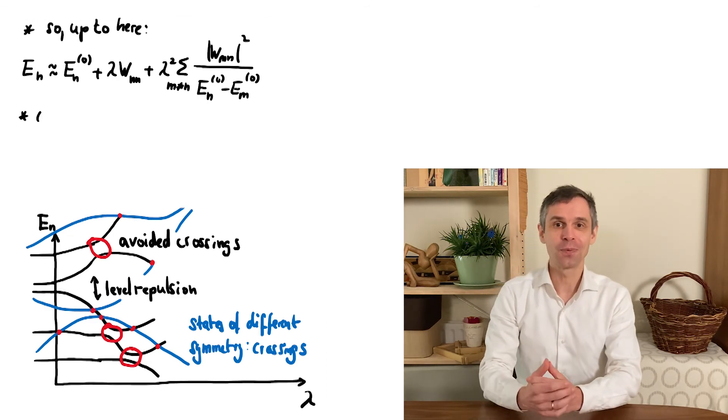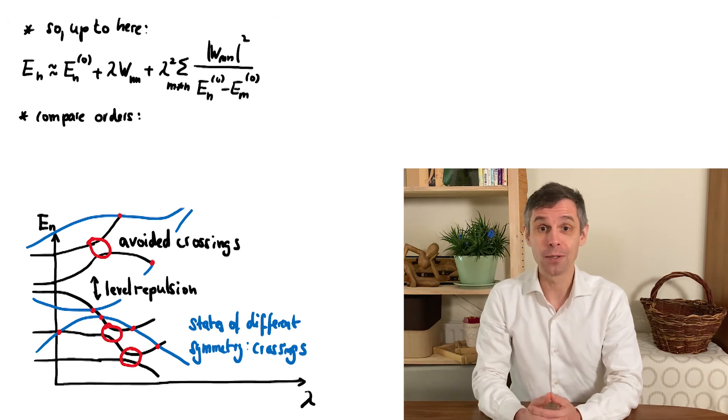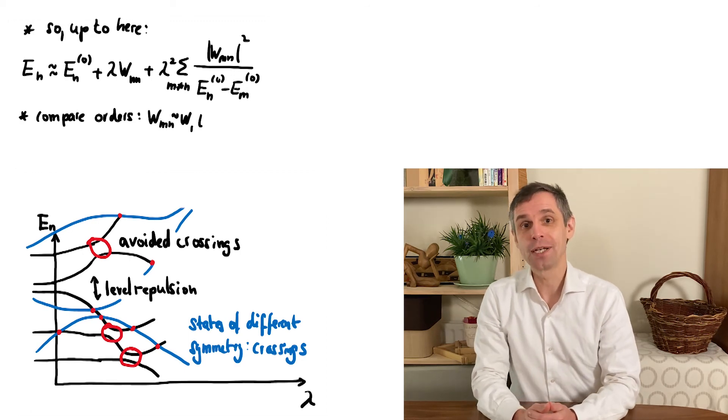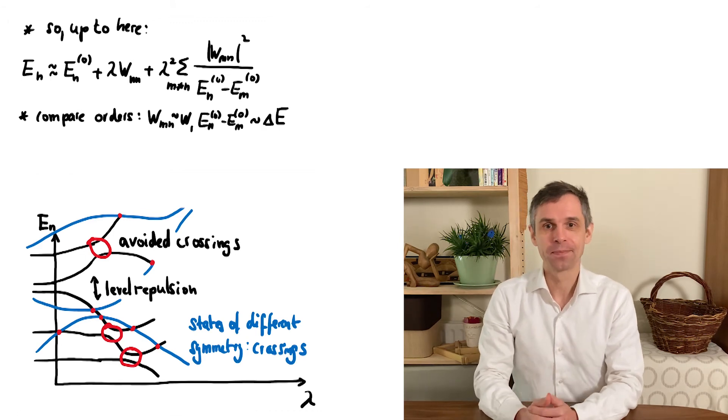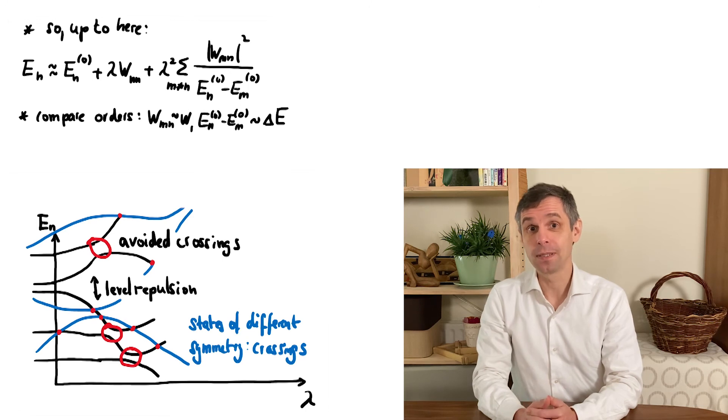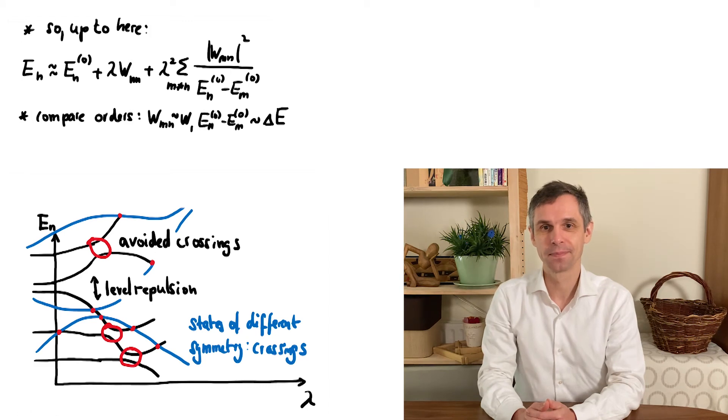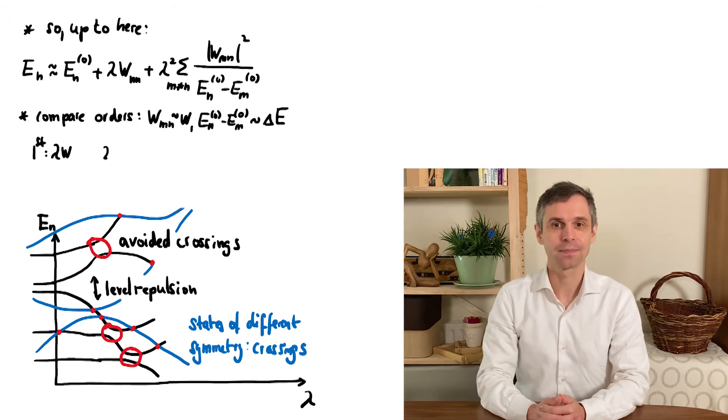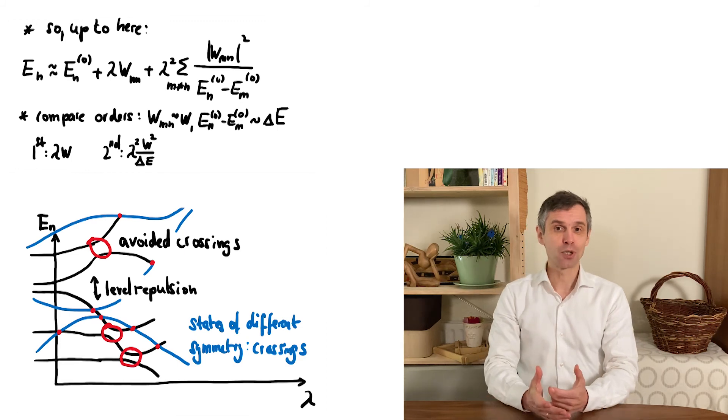To draw another general conclusion from these expressions, we compare the size of the different terms. This requires a bit more insight into the actual values of the expressions, but only in a roundabout way. We only care about the typical size of our perturbation, which I denote as W, and the typical energy spacing in our original system, we shall write as ΔE. This isn't an uncertainty, just a scale for the quantization, and we are thinking here of adjacent energy levels. Then we find that the different terms have a typical size as given here.